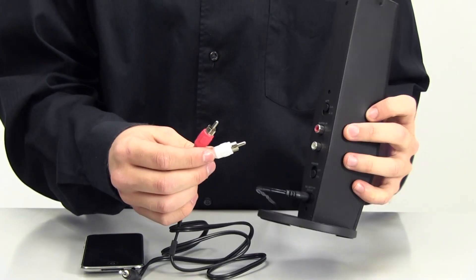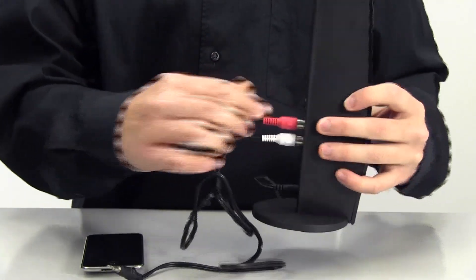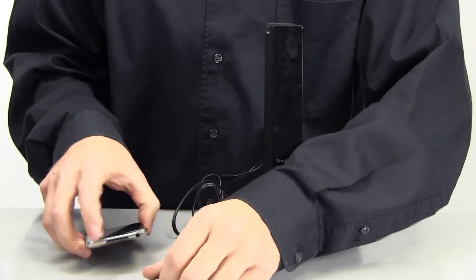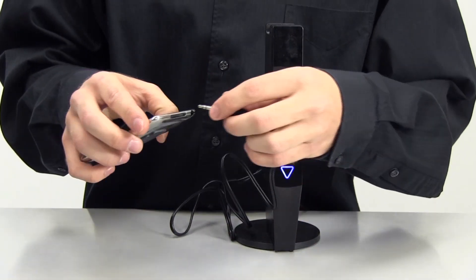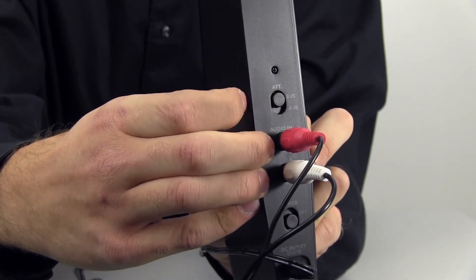You will plug the RCA end of the RCA male to 3.5mm male Y cable into the transmitter and the 3.5mm end into the audio jack on your device. You will then want to set your attenuation to 0 dB for the recommended signal strength.